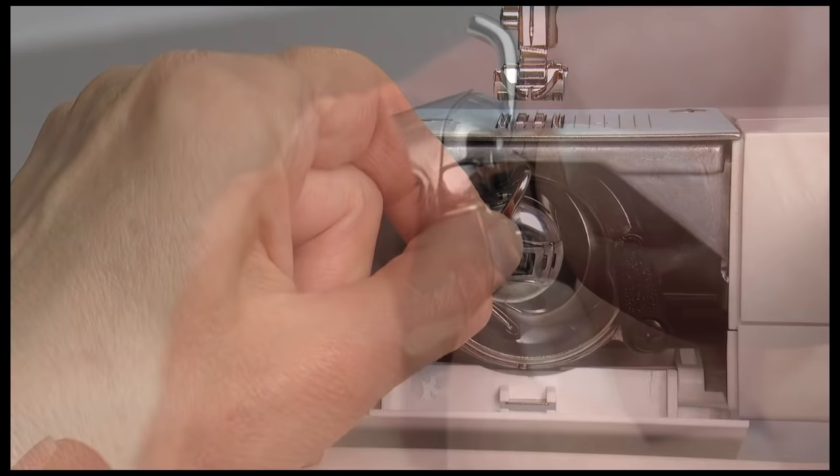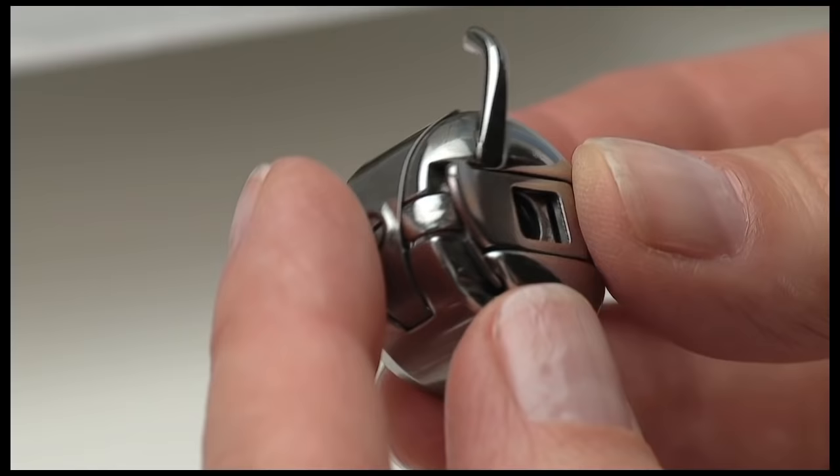There is a small screw on the outside which can be used to increase or decrease tension on the bobbin thread.